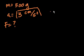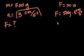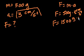So we're just going to use Newton's second law. Newton's second law tells us force is equal to mass times acceleration. So you might be tempted just to multiply mass times acceleration. You'd get force is equal to 500 grams times 3 centimeters per second squared. And you would get force is equal to 1,500 gram centimeters per second squared.